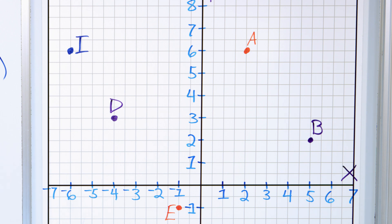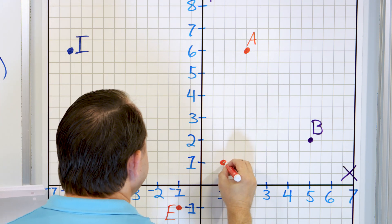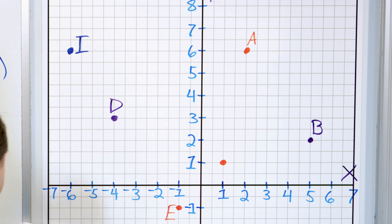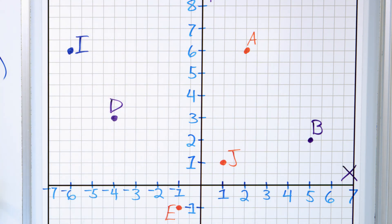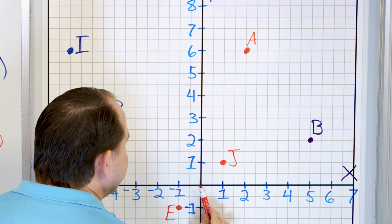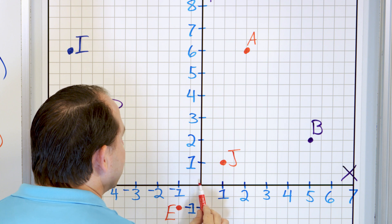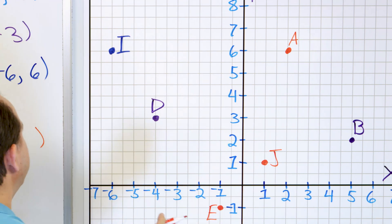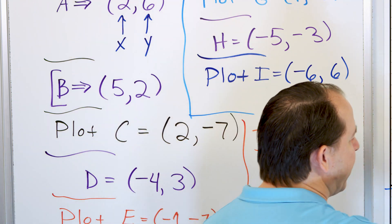Here is our last problem. I've put a point on the board — this is point J. Starting at the origin, we go over one unit for x and up one positive unit for y. So x is one and y is also positive one. Point J is at one comma one.